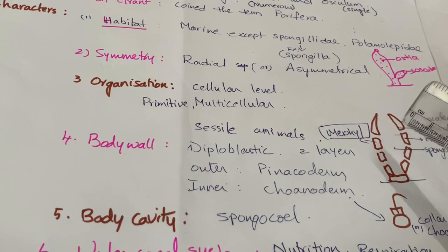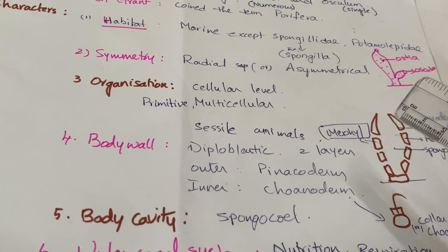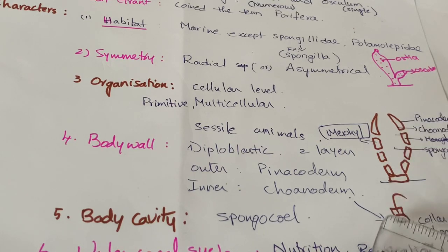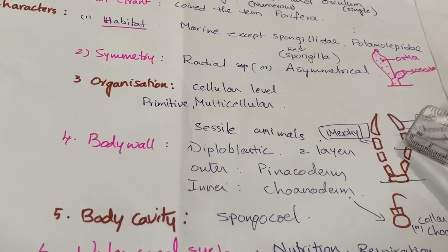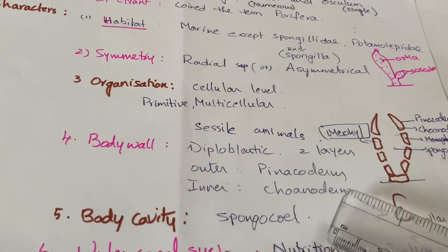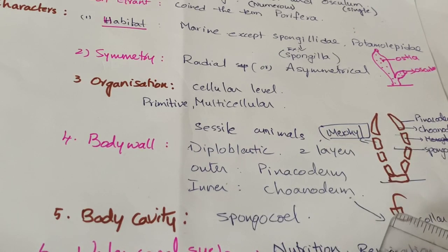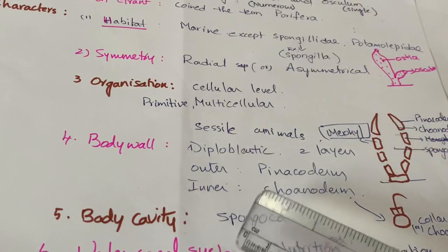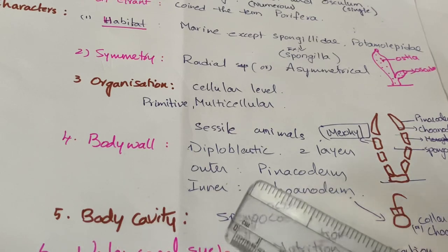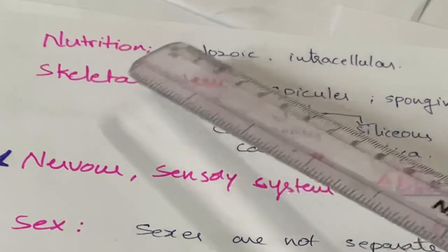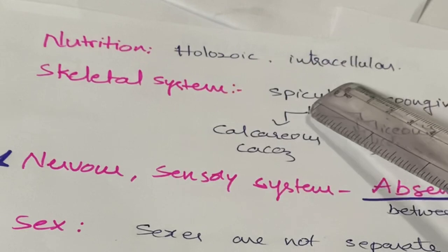For respiration, oxygen enters the spongocoel through the water and cells absorb oxygen by diffusion. For excretion, waste materials are first excreted into the water and the water exits through the osculum. So the canal system serves nutrition, respiration, and excretion — this is the characteristic feature of Porifera. In examinations, you may be asked: what are the functions of the canal system?